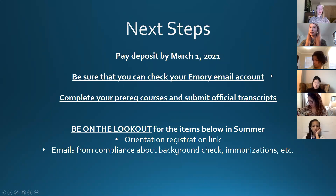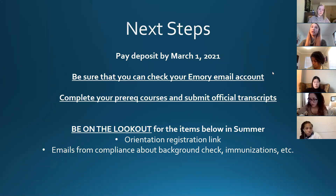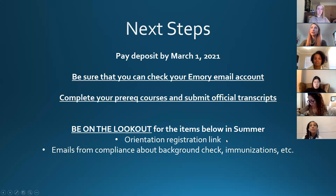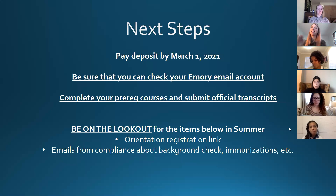After setting up your OPUS account, set up your Emory email. We'll start sending emails to your Emory email in late spring or early summer rather than your application email. Please complete prerequisite courses and submit official transcripts — there's a presentation on the event home page with details on how to do that. Be on the lookout for orientation links in the summer, and emails from Clinical Compliance about your background check and immunizations, which won't come until summer — you haven't missed anything.